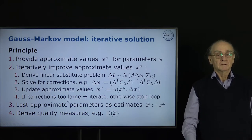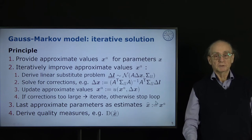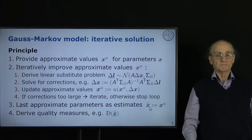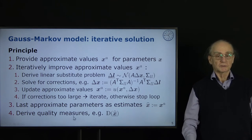After convergence we take the last approximate values as our estimates for the original problem. We can then derive quality measures, for instance the covariance matrix of these estimates.